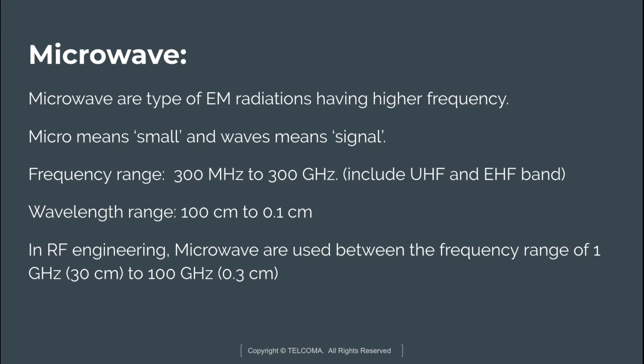The wavelength ranges from 100 cm to 0.1 cm. In RF engineering, microwaves are used in the frequency range of 1 GHz to 100 GHz, meaning these frequencies are used for the purpose of transmission and reception of information.